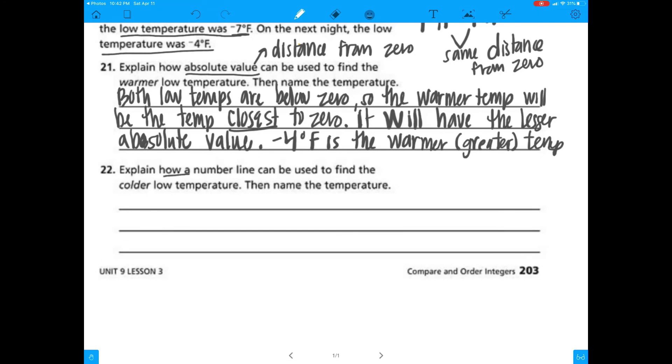So number 22, explain how a number line can be used to find the colder low temperature. Then we're going to name that temperature. So you use a number line. You can be vertical or horizontal. You slap it on there. I got origin. I got 0. Boom. I know I'm only going to need the negative numbers. So I plot it. Negative 1, negative 2, negative 3, negative 4, negative 5, negative 6, negative 7.